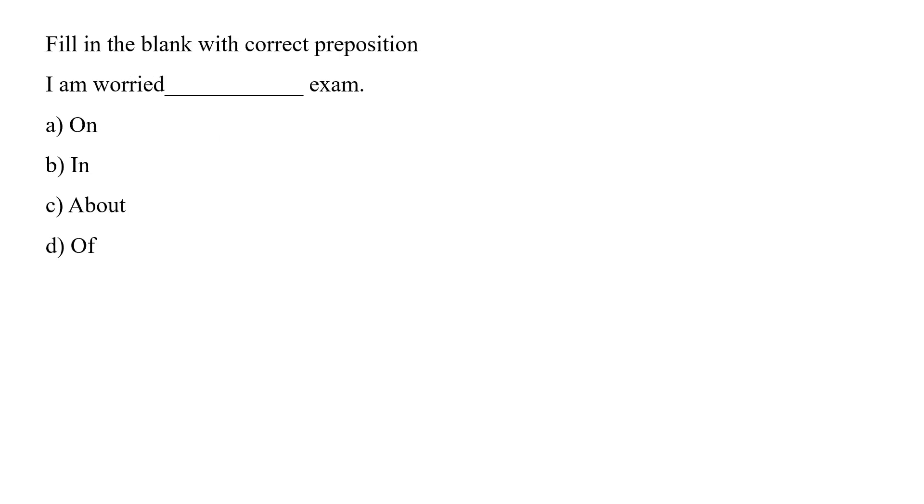Fill in the blanks with the correct prepositions. I am worried dash exam: on, in, about or of. A preposition is a word which comes before a noun or a pronoun and establishes a relationship between elements of a clause or a word. Option C would be more close to correct because it is connecting the two words worried and exam. So the correct statement would be I am worried about the exam.